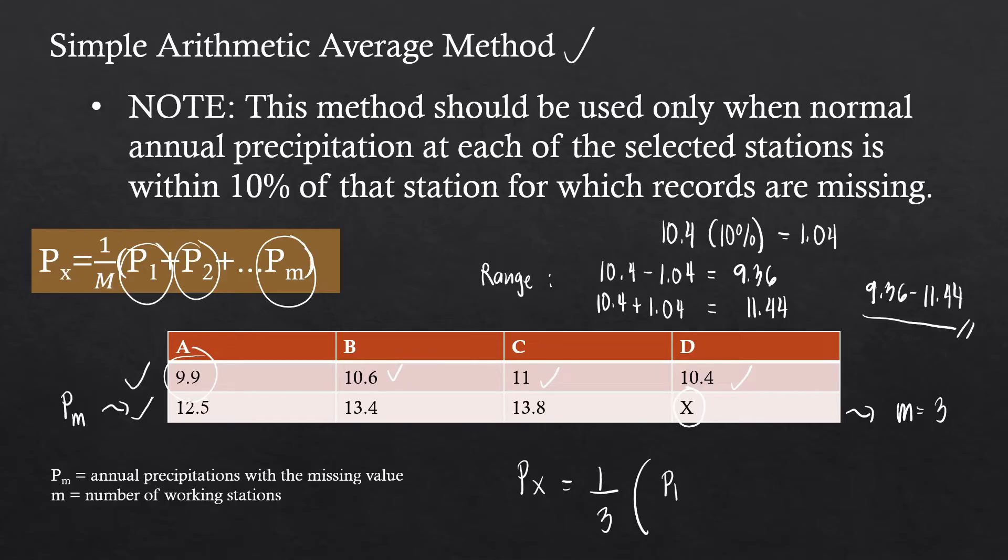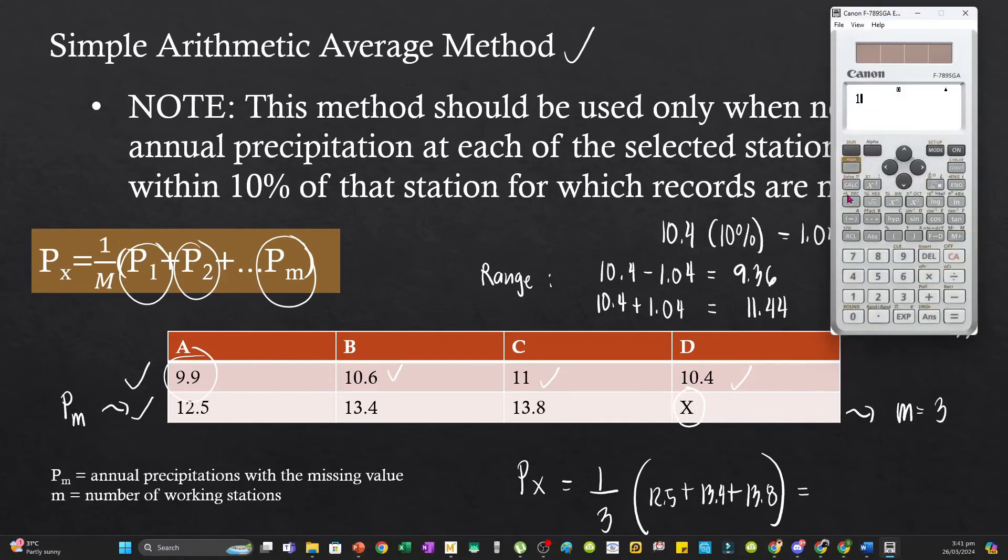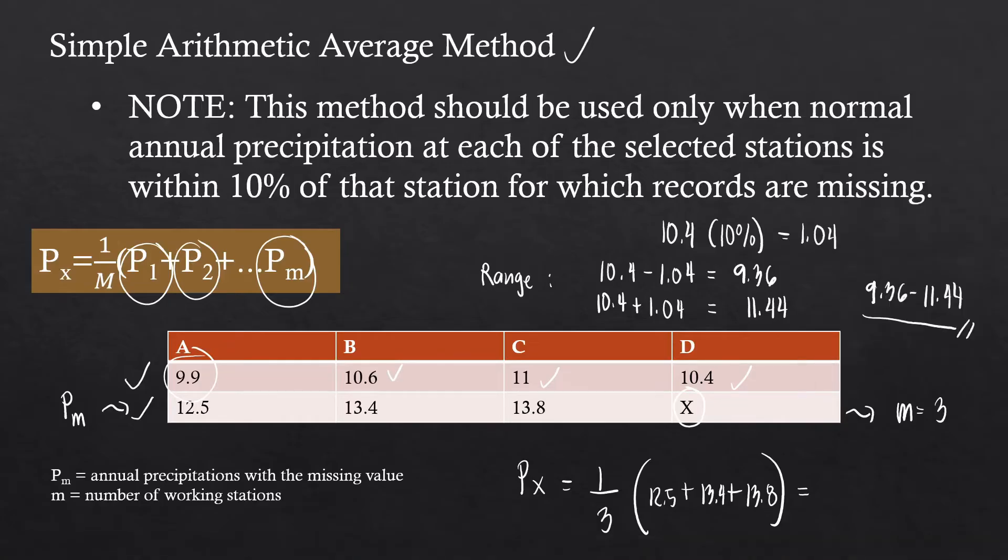P1 is 12.5, P2 is 13.4, and P3 is 13.8. So P sub X equals 1 over 3 times 12.5 plus 13.4 plus 13.8, which gives us 13.23. Our missing data will be 13.23. This is an example of a case where we can use this method.